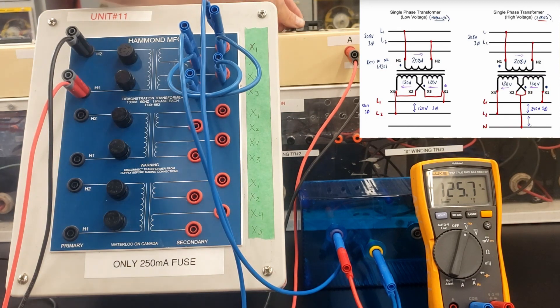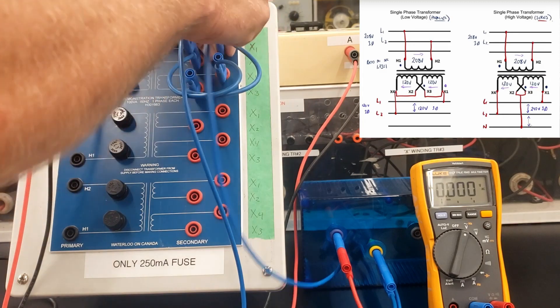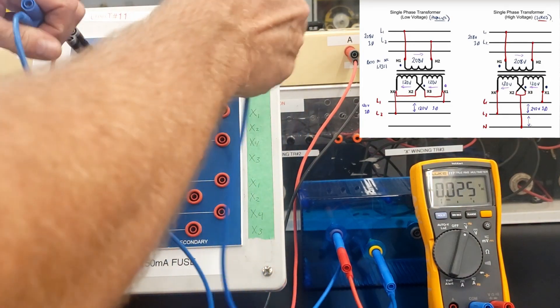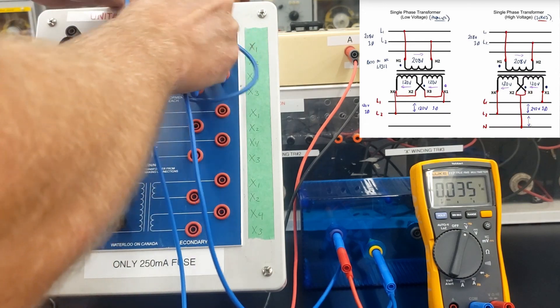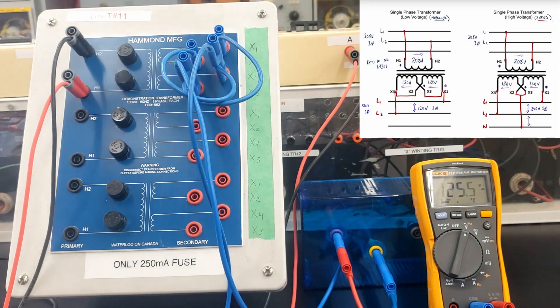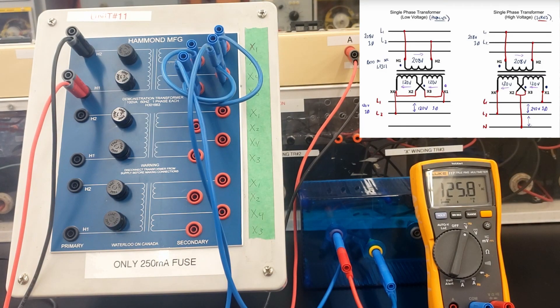I have 125 volts between X1 and X2. And I have 125 volts between X3 and X4. If I wanted to test out the voltage between X3 and X4, then I move these guys down to X3 and X4. Energize the circuit again. And I got 125 volts on that winding as well.